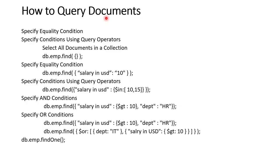To query or read documents, we say DB dot collection name dot find, then round brackets. In curly brackets we give the condition — for example, salary in USD is 10. We can also specify conditions using query operators. For example, to see all employees where salary in USD is between 10 and 15, we give that condition accordingly. Similarly we can give an AND condition or an OR condition.